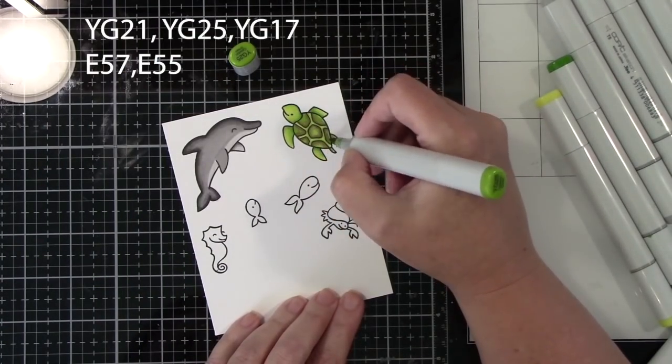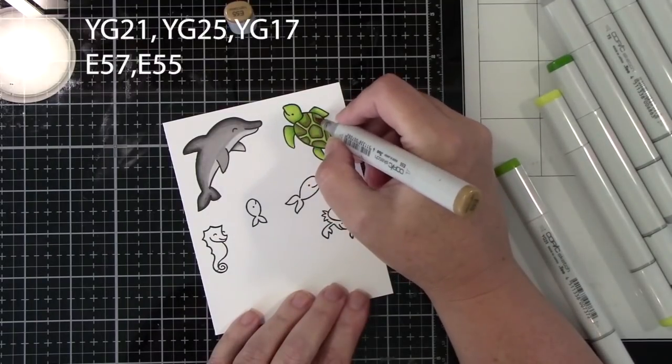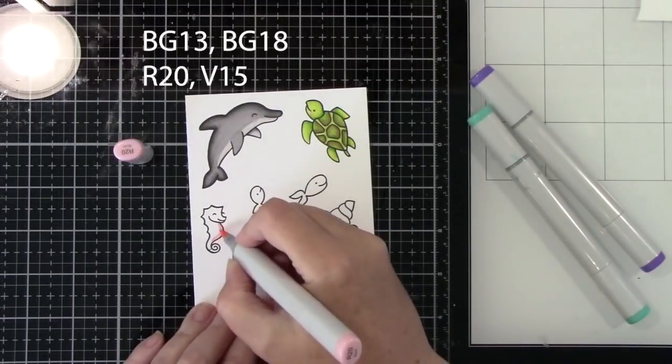So again, just laying down my light color, coming in with my dark to add shadow, blending out with my medium color, really super simple.